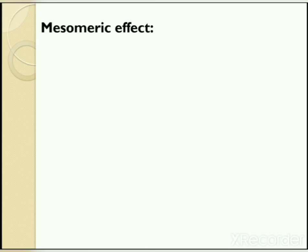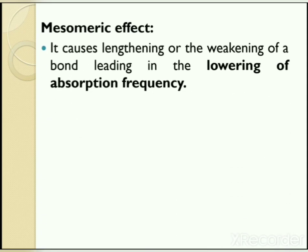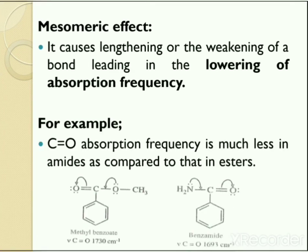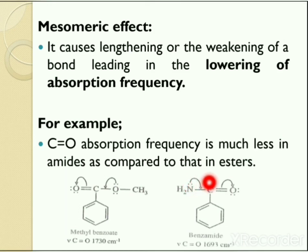Next is the mesomeric effect. The mesomeric effect is a property of substituents or functional groups in a chemical compound, defined as the polarity produced in the molecule by the interaction of two pi bonds, or between a pi bond and a lone pair of electrons on an adjacent atom. The mesomeric effect causes lengthening or weakening of a bond, leading to a lowering of the absorption frequency. For example, C=O absorption frequency in benzamide is much less than in methyl benzoate, because nitrogen is less electronegative than oxygen and its lone pair participates more in conjugation, causing a greater degree of conjugation in amides compared to esters.